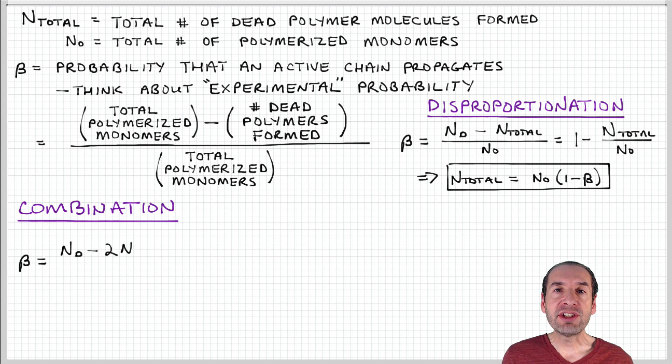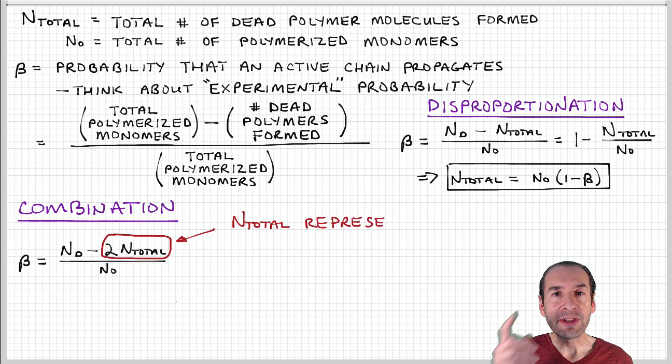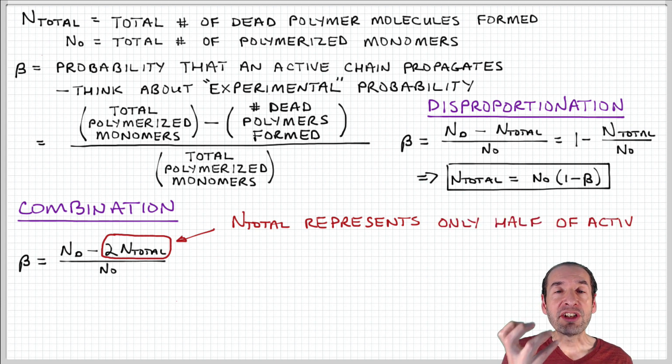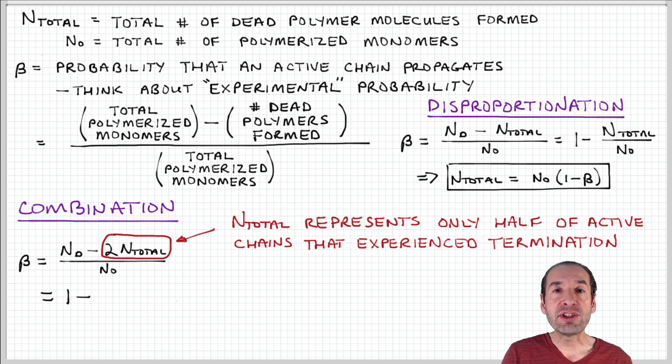Now let's look at the case of combination termination. And here, we have to think about this a little bit more carefully, because counting the number of dead molecules or dead polymers doesn't directly give us the number of termination events, because two active chains now have combined to form each dead polymer.